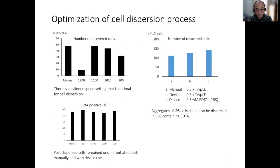The optimal cylinder speed for cell dispersion was compared and verified. As a result, in the cell line used in this study, the yield was maximum at 1,100 RPM, and the yield decreased at higher RPM. It was suggested that there is a cylinder speed that maximizes cell recovery.